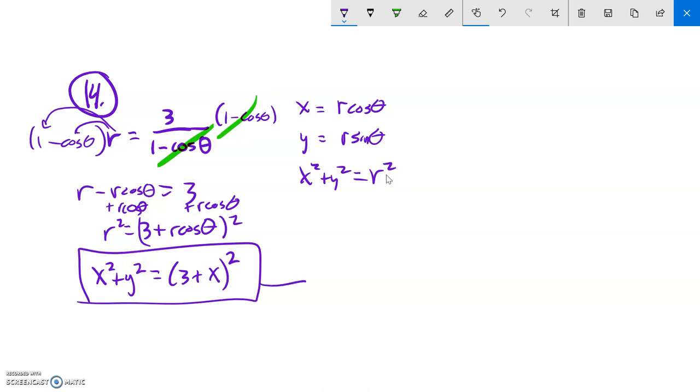If I wanted to take it further, if I square this, multiply it, it's 9 plus 6x plus x squared, and then subtract x squared from both sides, and that goes, then you have y squared minus the 6x minus the 9 equals 0.